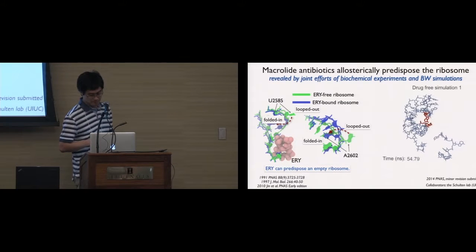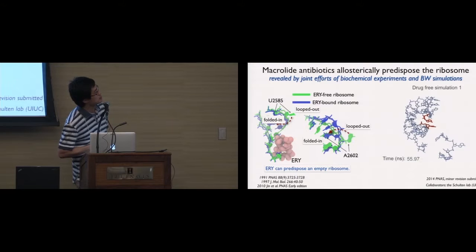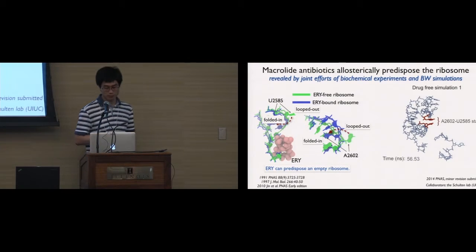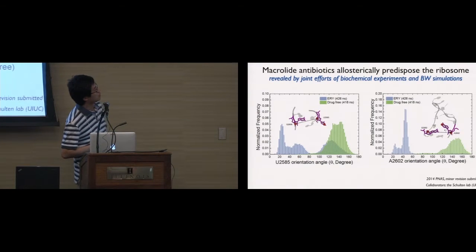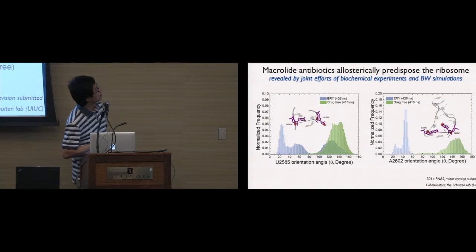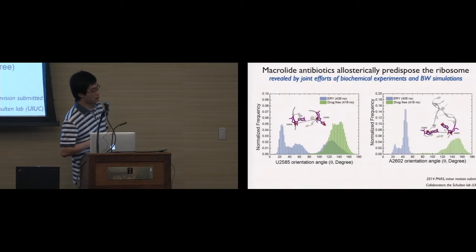This kind of interaction is called stacking interaction for the nucleotides. We can also see from the distribution of the orientation angles of the two nucleotides that when the drug is bound, the two nucleotides favor the folded-in orientation.